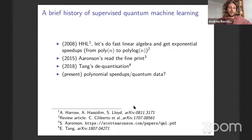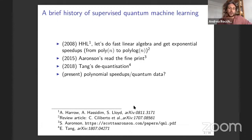Let me begin with a very brief history of supervised quantum machine learning. We could say it all began with one of Aram's works in 2008 that introduced an exponentially faster quantum algorithm for doing linear algebra. This opened up the possibility of speeding up essentially every main supervised machine learning algorithm. The trick was quite simple: all these algorithms have an optimization problem that can be cast as a matrix inversion problem. Applying HHL, we can go from an algorithm that is polynomial in N to one that is polylogarithmic in N.